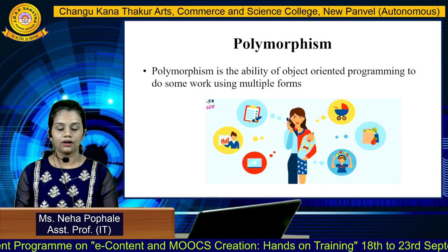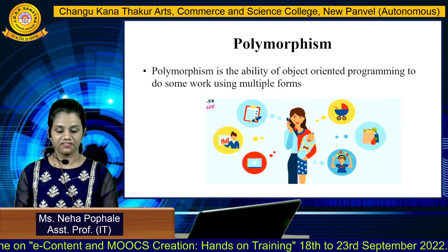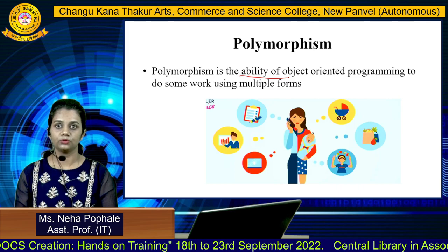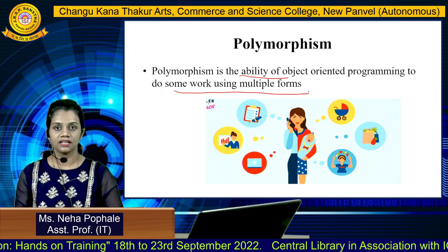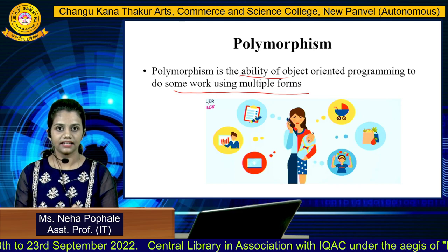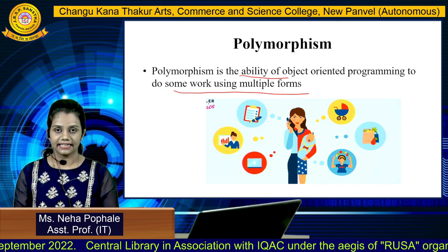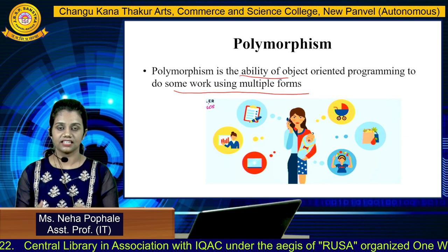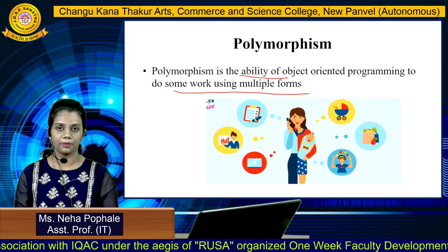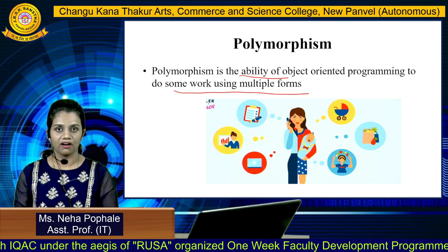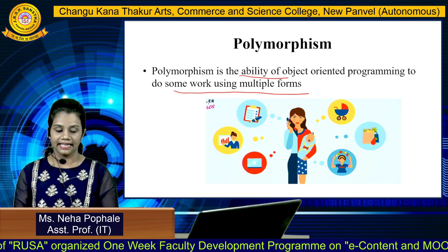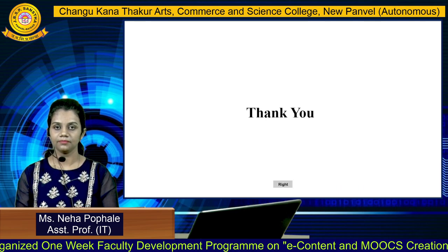Going to the last pillar of object-oriented programming, that is polymorphism. Polymorphism is the ability of object-oriented programming to do some work using multiple forms. As you see in the image, the woman can perform multiple tasks at a time — she is taking care of the family, the child, the in-laws, she is cooking, and also working in a corporate company. That is what is called polymorphism. One person has the ability to do different tasks. That is polymorphism. Thank you.